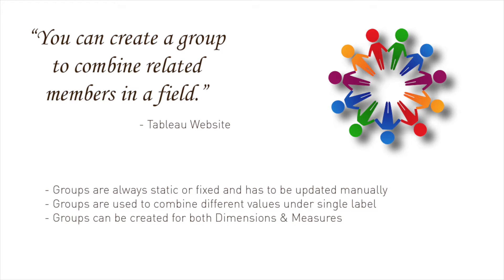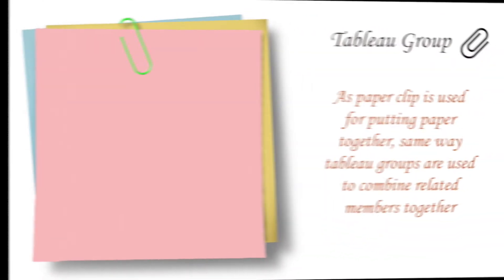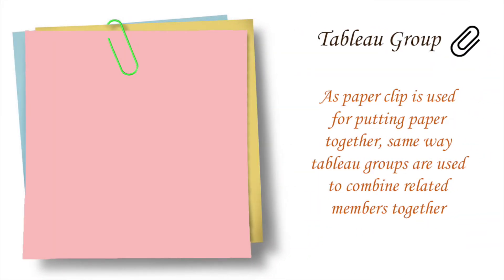Groups are always static, or you can say fixed, as we always have to update them manually. They are used to combine different values under a single label for both dimensions and measures. If you look at the icon for group in Tableau, it is a paper clip. Just as a paper clip is used for putting papers together, groups are used to combine related members together.